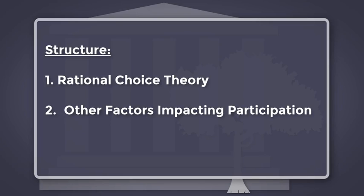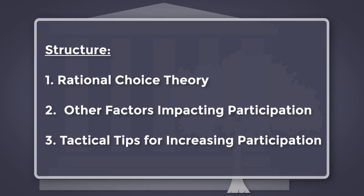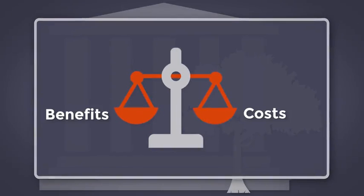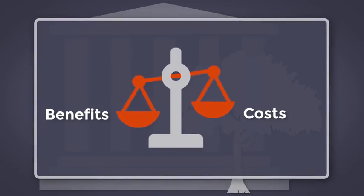In this lecture, I will first look at why people participate. I will start by looking at rational choice theory and explore two concrete examples of citizen participation in terms of benefits and costs of participation. Citizens will participate only when the benefits of participating are greater than the costs of doing so.